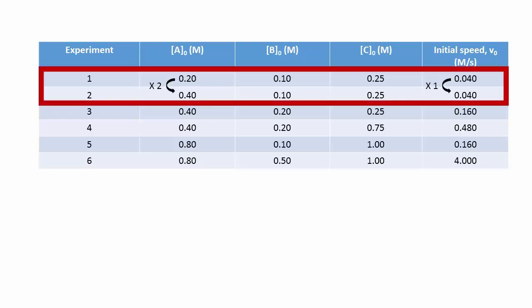For reactant A, we see that A's influence is non-existent, as doubling A has no influence on the reaction rate.